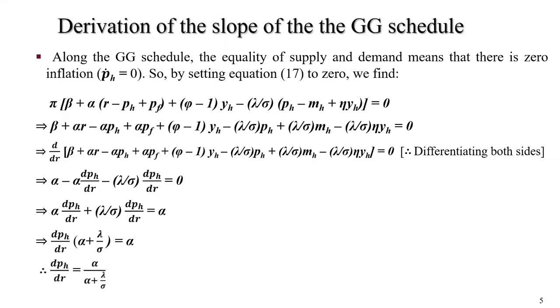Derivation of the slope of the GG schedule. Along the GG schedule, the equality of supply and demand means that there is zero inflation. P dot H equals zero. Since the GG schedule shows supply equals demand with zero inflation, we can set equation 17 equal to zero. Taking the derivative with respect to R gives us the slope of the GG schedule.